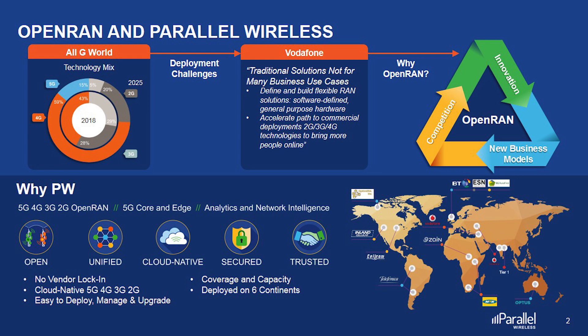Parallel Wireless deployments span the globe and are helping these operators to address the challenges they face in planning, deploying and maintaining their All-G networks while reducing the total cost of ownership. In order to deliver these flexible and elastic edge-centric architectures that support 5G as well as 2G, 3G and 4G, our ecosystem partner Supermicro is critical.